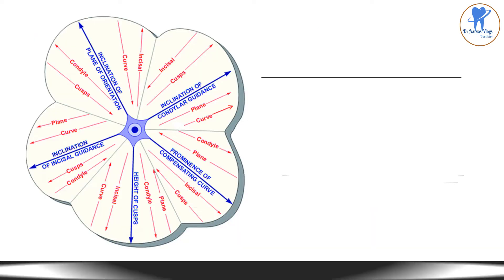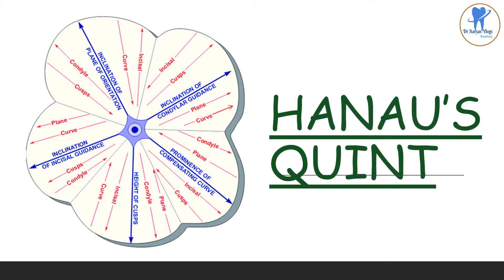This is Hanau's quint. The factors are: inclination of plane of orientation, inclination of condylar cadence, prominence of compensating curve, height of cusp, and incisal cadence. These are the factors which contribute to Hanau's quint.